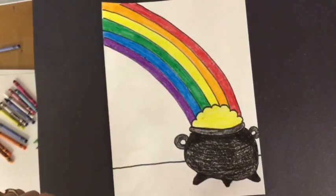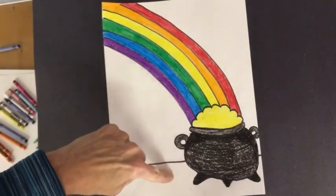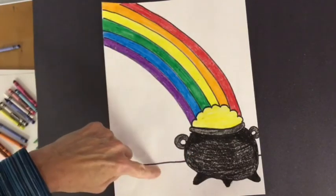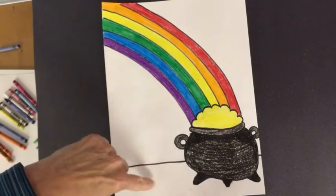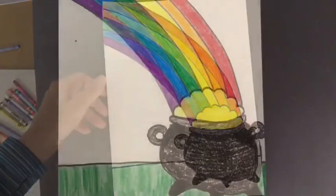So here's my pot of gold with my rainbow and a little bit of grass right here. So I'm going to take some time just to color the grass green and then I'll be finished.